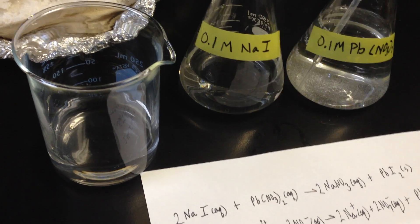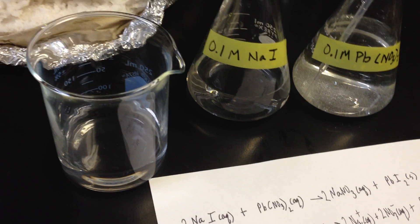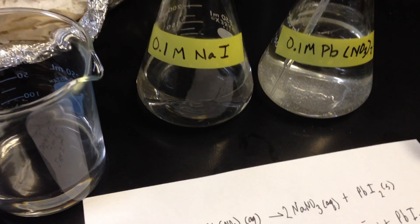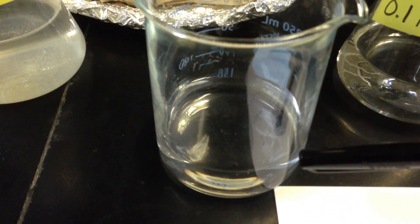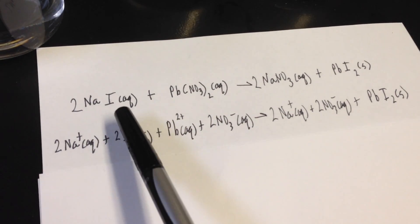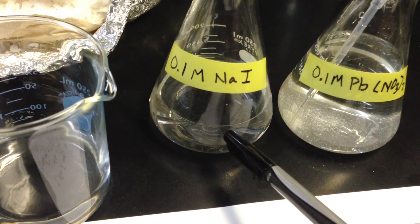I'm going to show you guys a couple of double replacement precipitation reactions. So we have sodium iodide in solution, and lead nitrate in solution. I place some sodium iodide in this beaker, and we're going to react sodium iodide, AQ means it's dissolved in water, which you can see it is.